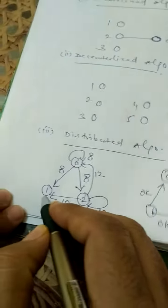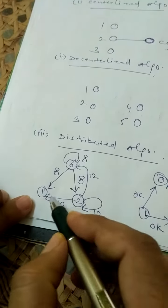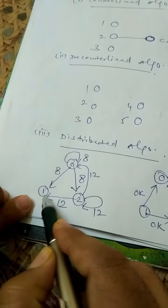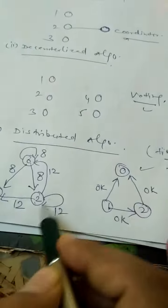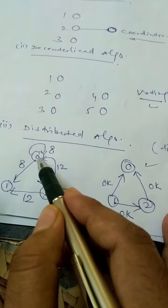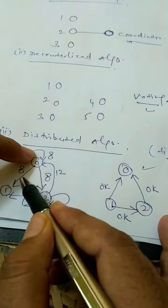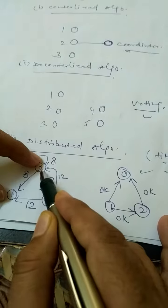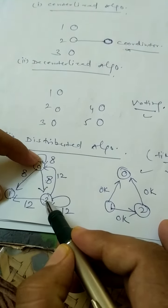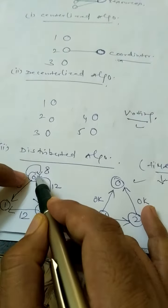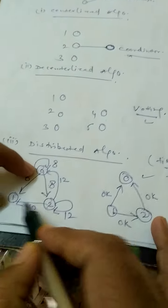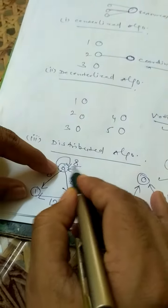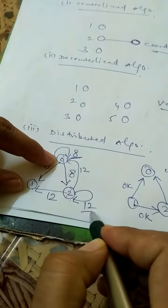The main approach used in the distributed algorithm involves three processes: process 0, process 1, and process 2. In this scenario, process 0 sends its timestamp to process 1 and process 2 — that timestamp is 8. Process 2 also sends its timestamp to process 1, process 0, and itself — the timestamp of process 2 is 12.